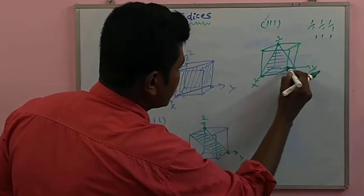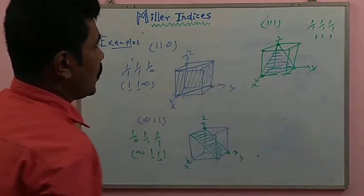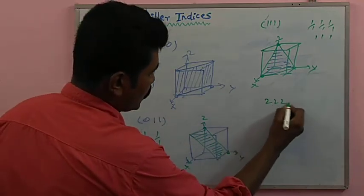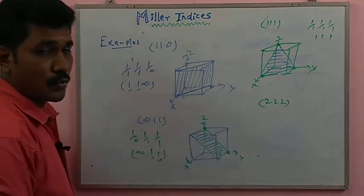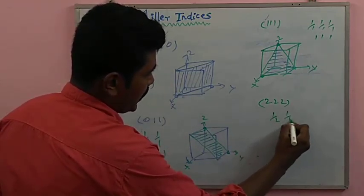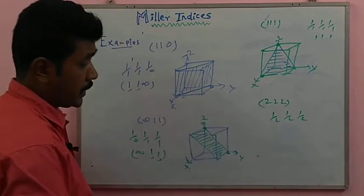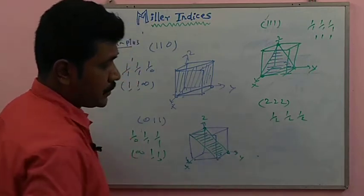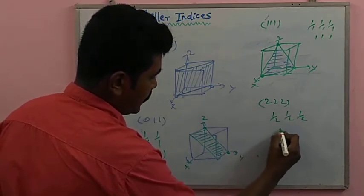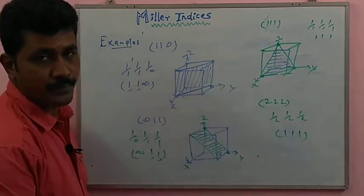Shade the particular portions — this is the (1 1 1) plane structure. Next, the (2 2 2) plane. The reciprocals are 1/2, 1/2, 1/2. Taking LCM of 2 gives 2×(1/2) for each axis, which cancels to 1, 1, 1. So (2 2 2) has the same structure as (1 1 1) — no difference.